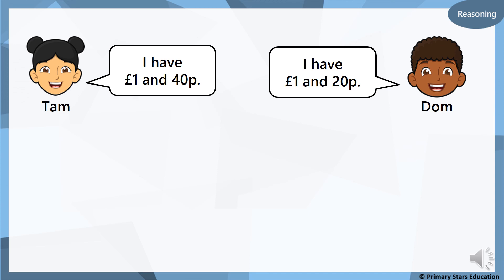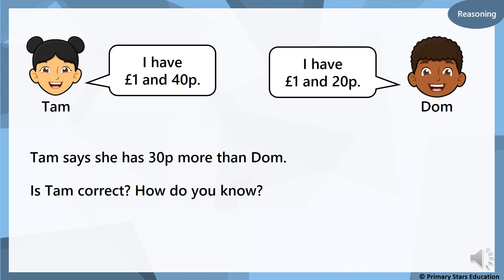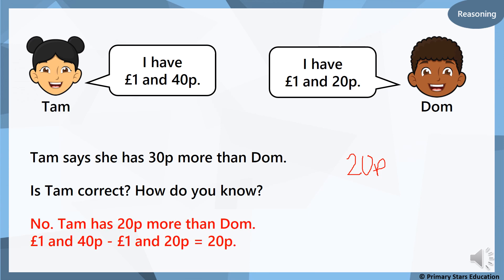Tam says she has one pound and forty pence. Dom says he has one pound and twenty pence. Tam says she has thirty pence more than Dom — is Tam correct? If we put twenty in our heads and count to thirty then to forty, how much have we counted? There's twenty pence difference, so Tam has twenty pence more than Dom, not thirty. One pound and forty pence minus one pound and twenty pence equals twenty pence.